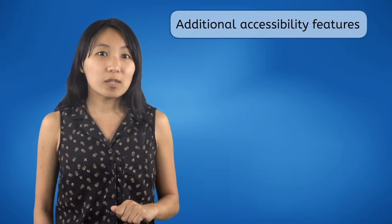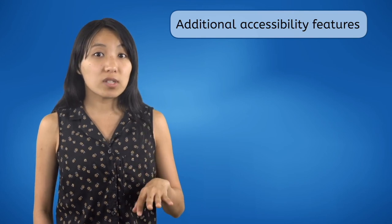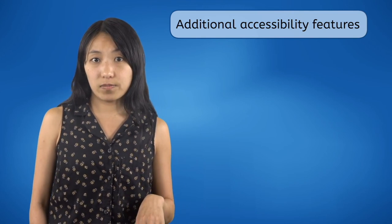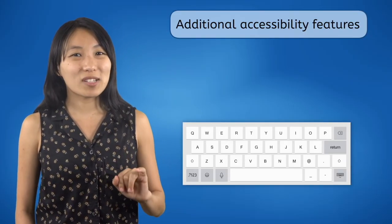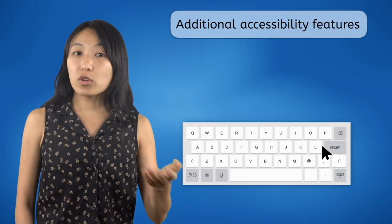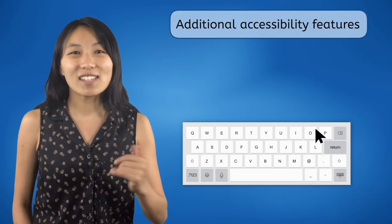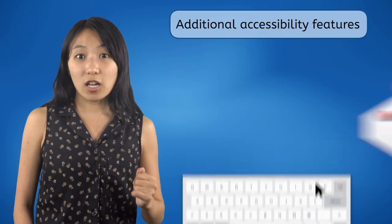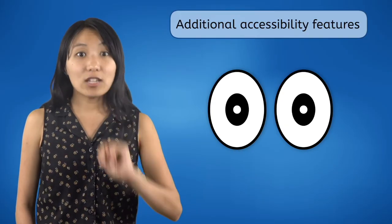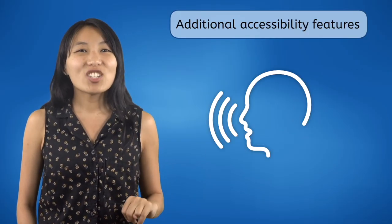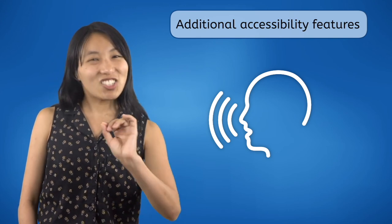For people with physical disabilities, using physical input devices may not be an option, so there are accessibility features that allow different ways of inputting commands. For those who can't use a physical keyboard, most computers have a virtual keyboard accessibility feature that you can type on by moving the on-screen cursor. For those who can't use a hand mouse, there are alternative input devices like joysticks and foot mice, or completely non-physical input devices like eye trackers or voice commands. Each of these additional input devices will have its own configuration menu.